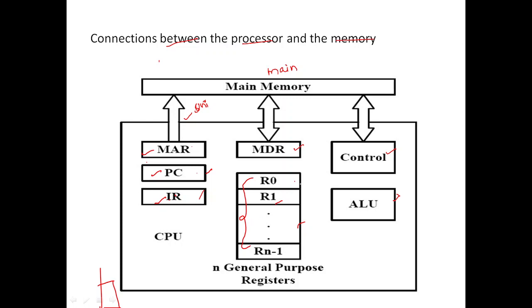Now let's see how the processor and memory communicate. Consider the instruction: ADD LOCA, R0. This instruction adds the contents of LOCA to the contents of R0, and the result is stored in R0. Initially, the program resides in main memory, because the CPU communicates only with main memory and not with any other type of memory. So instructions must be stored in main memory.